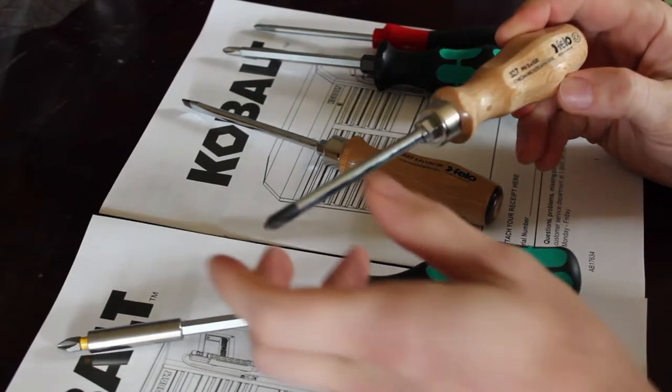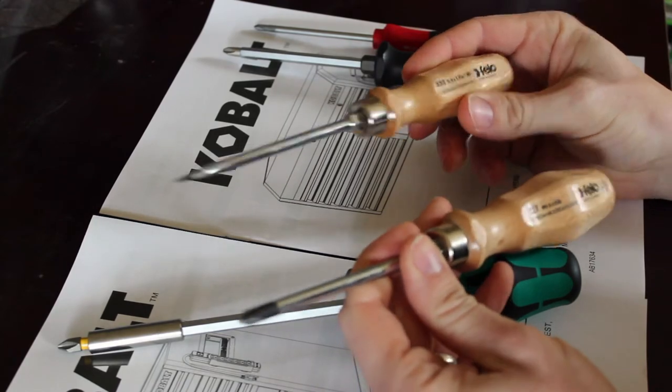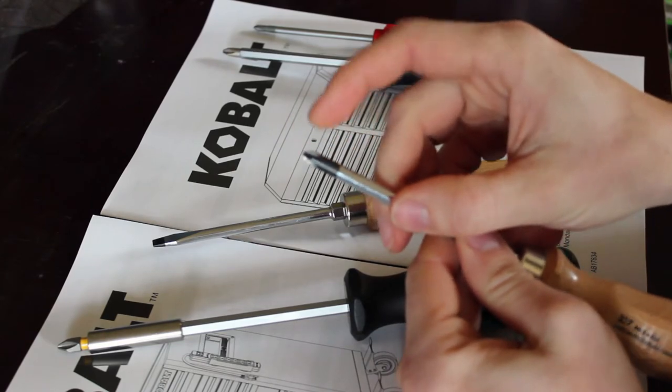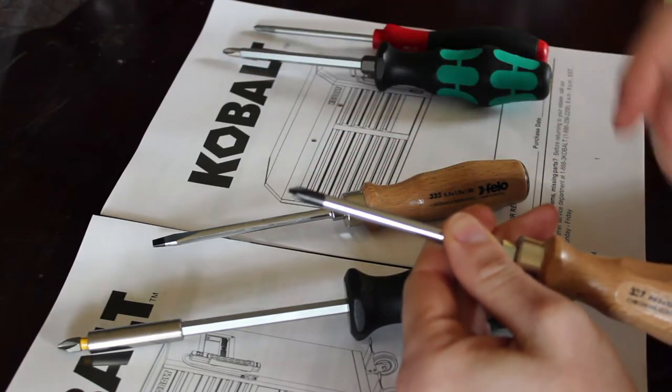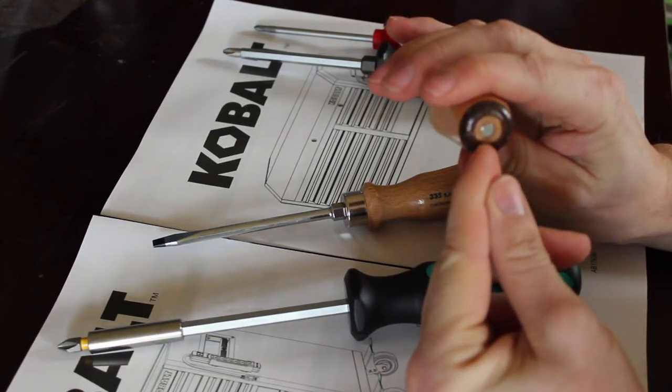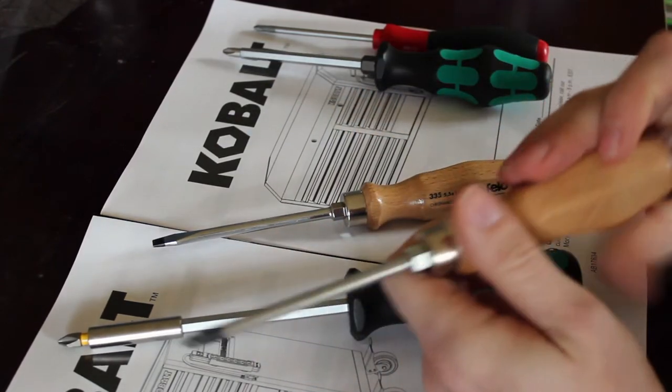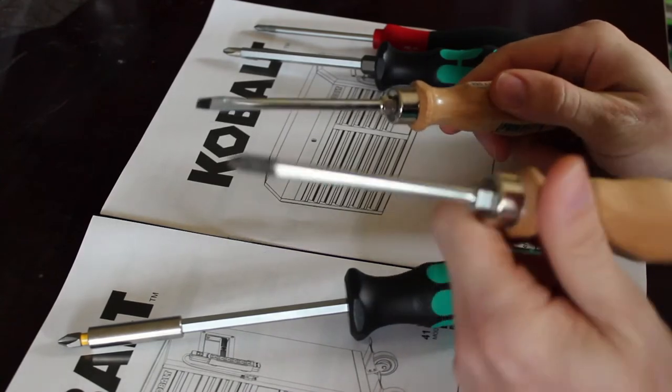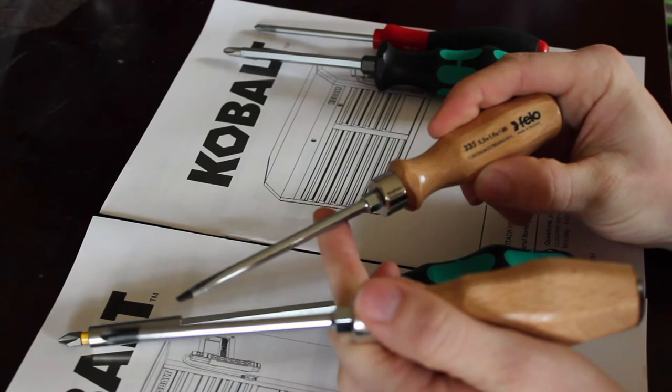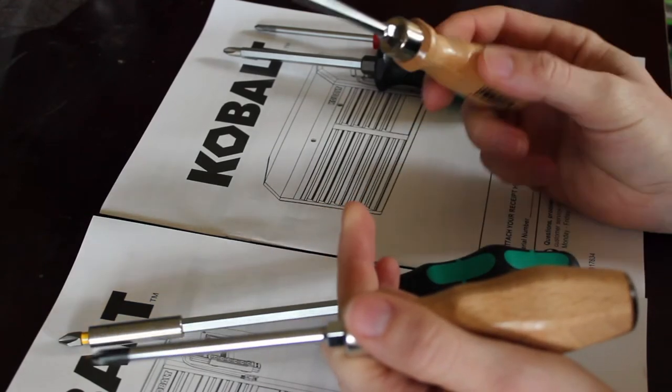My next go-to are going to be my Philo wood drivers, wood handle drivers. They got the bolster, they got the really nice blackened tip, or different metal tip. It's really nice. It gets good grip on there. It is a pass-through shaft on the handle, so you can hammer on it. I haven't had a need to yet, but this one came in the kit, the budget-friendly screwdriver kit. This is number 335, five and a half millimeter by four inches or whatever.